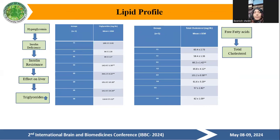Lipid profile — triglycerides and total cholesterol: hyperglycemia and insulin deficiency lead to insulin resistance, decreasing its effect on the liver, so triglyceride levels also increase in the diabetic group. Free fatty acids decrease while total cholesterol also increases.